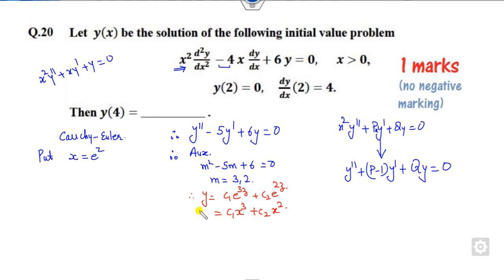Once you have the value of y, you can apply the initial conditions. y' is 3c₁x² + 2c₂x. Now apply the conditions: when x = 2, y = 0, so this is 8c₁ + 4c₂ = 0.